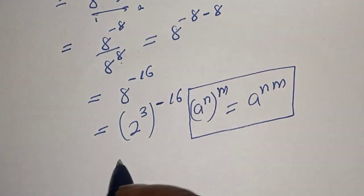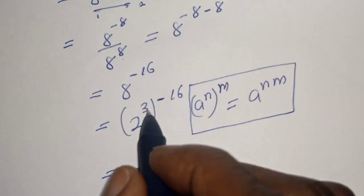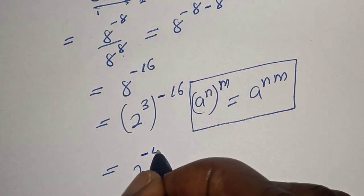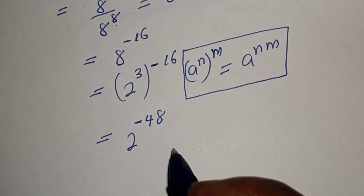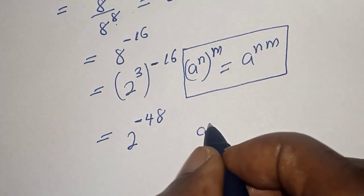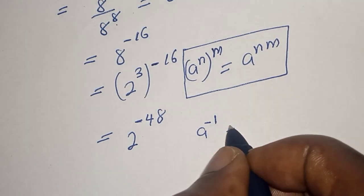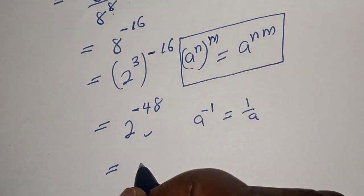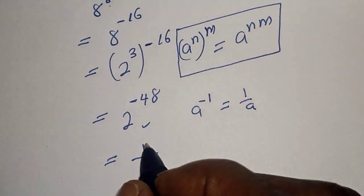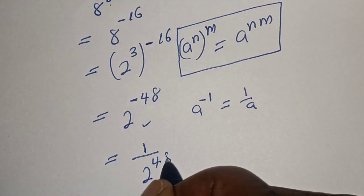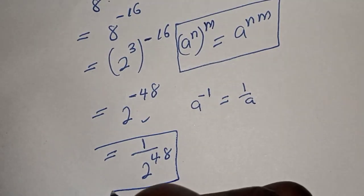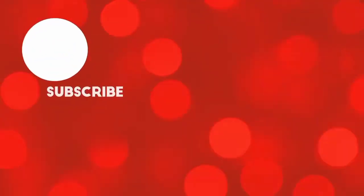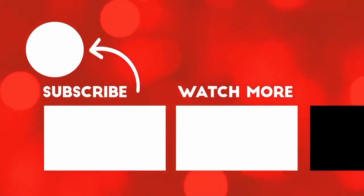And this becomes 2 raised to power 1 raised to power minus 8, that is minus 48. Also, if you have a raised to power minus 1, this is equal to 1 over a. And this becomes 1 divided by 8 to the power of 48. This is the final answer. Before you leave, like, share, comment and subscribe. Thank you, bye.